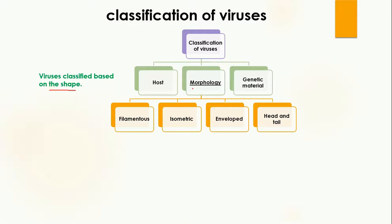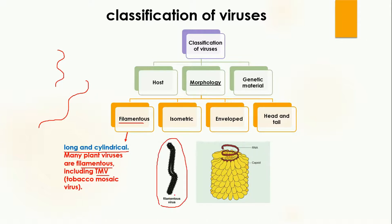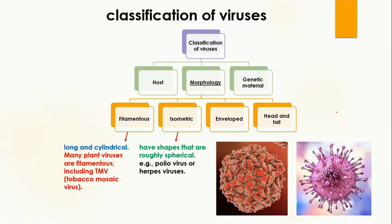The second classification of viruses is based on shape or morphology. There are generally four categories: filamentous, isometric, enveloped, and head-and-tail viruses. Filamentous viruses, as the name indicates, are long and cylindrical — like an earthworm. Many plant viruses are filamentous; for example, tobacco mosaic virus. Here you can see its long and cylindrical structure.